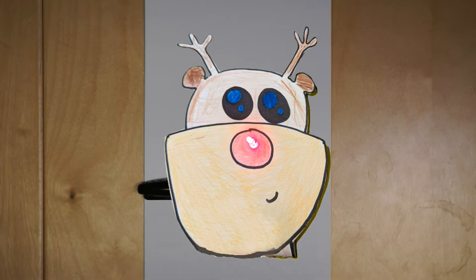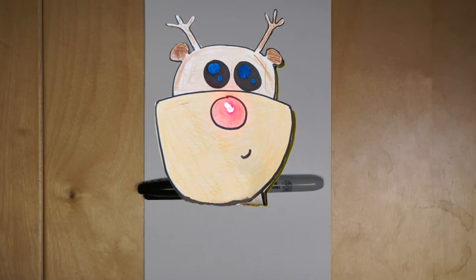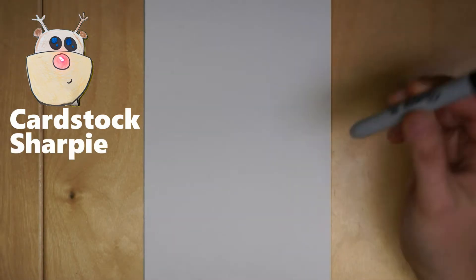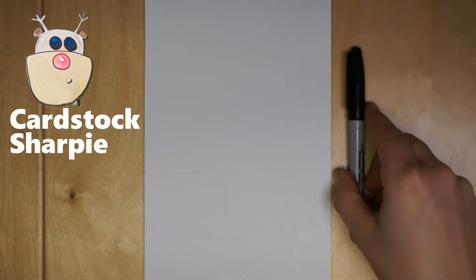Hi, it's Dr. Erika, and I'm so excited that you are joining me for this Paper Circuit Rudolph the Red-Nosed Reindeer project. To get started you're going to need a piece of cardstock paper and a sharpie or a pencil or whatever you want to draw with.